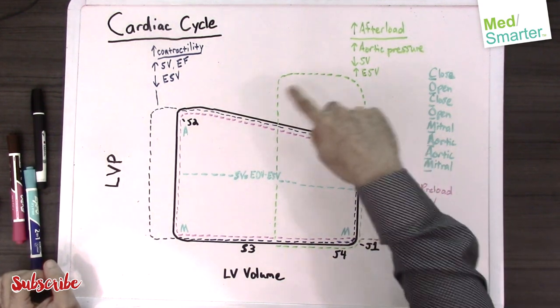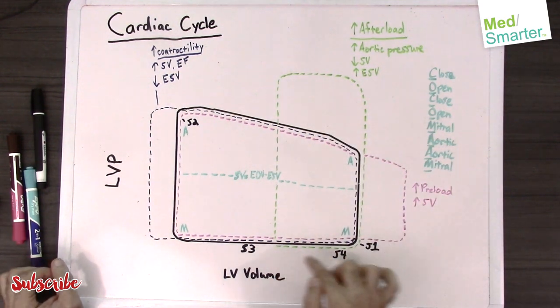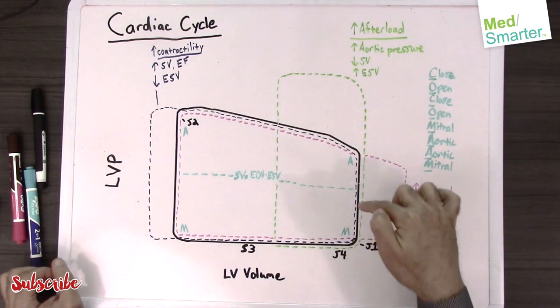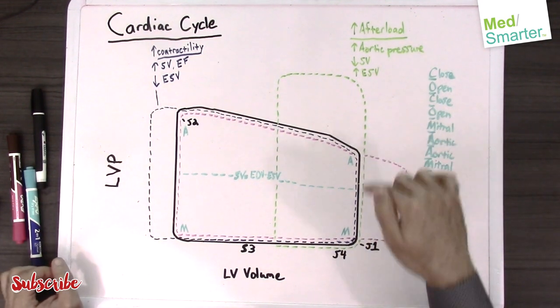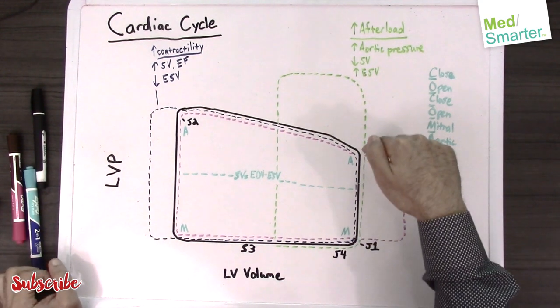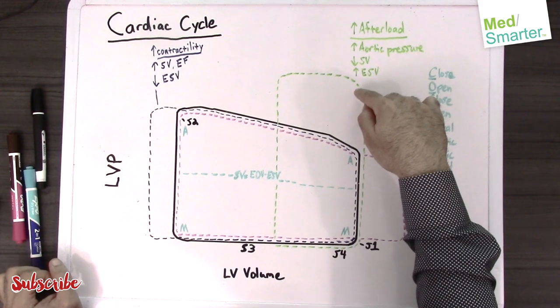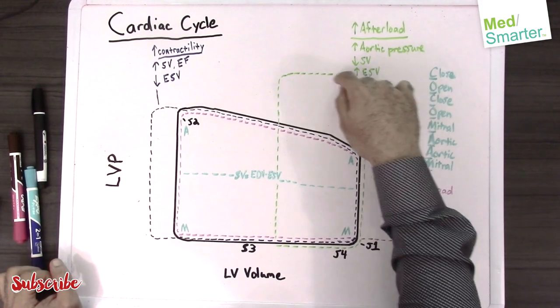If you can see this green line, when we talked about in a normal heart that the heart has to overcome the pressure in the aorta, now you can see here the heart has to go through a lot more contraction for it to overcome this pressure in the aorta.